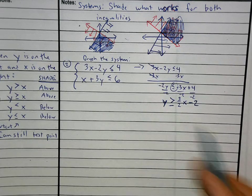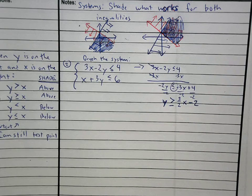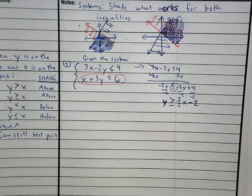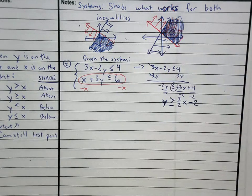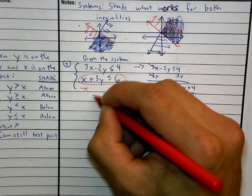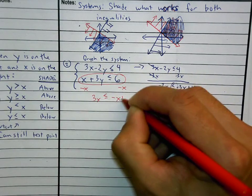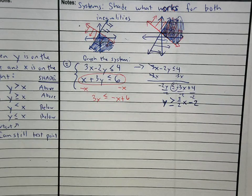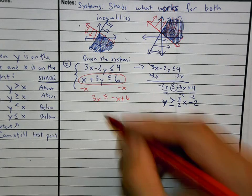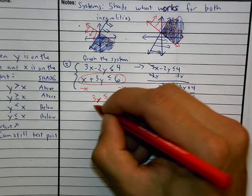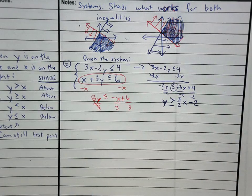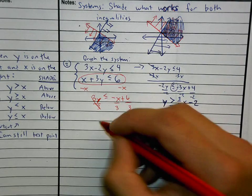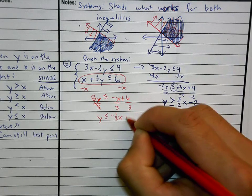Now that you have your top equation in slope-intercept form, you can graph it. But I wouldn't stop there. I would go over to your second equation and get that into slope-intercept form too. Might as well. I would subtract X and subtract X. 3Y is less than or equal to negative X plus 6. Then I would divide by 3. When you divide one thing by 3, you divide everything by 3. Y is less than or equal to negative 1 third X plus 2.